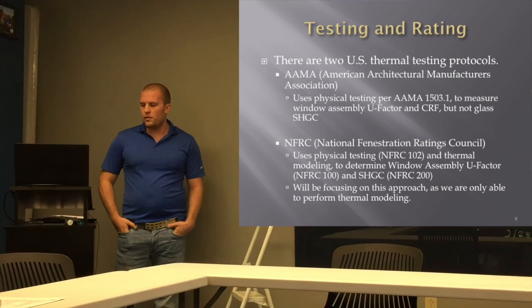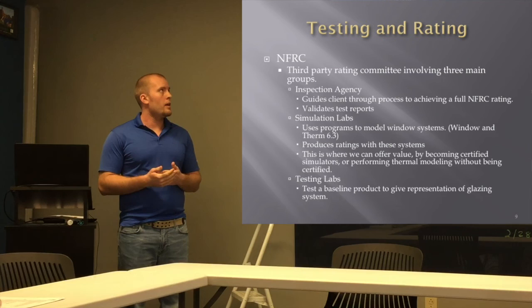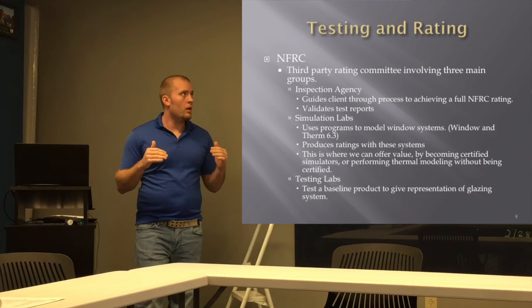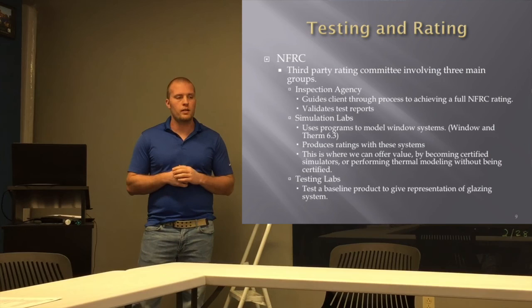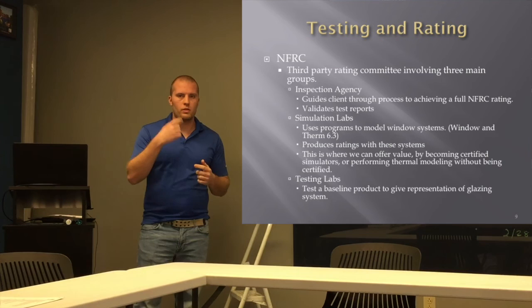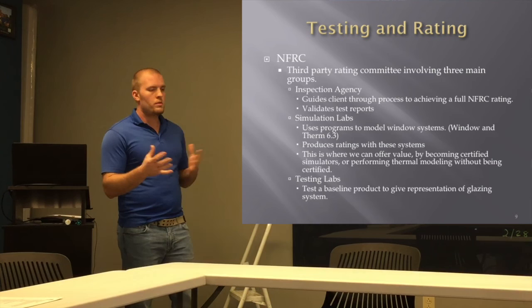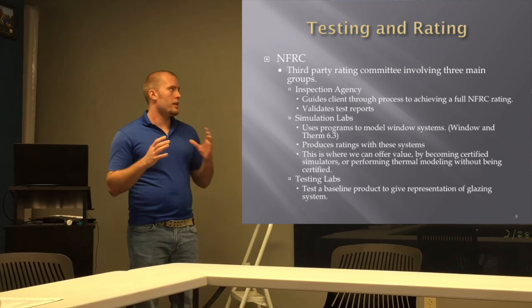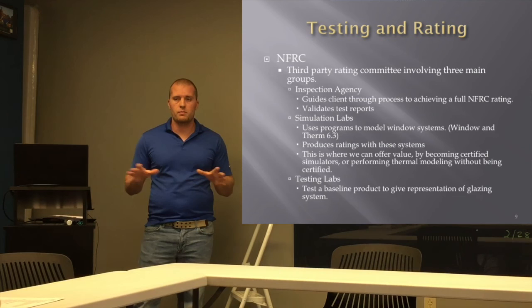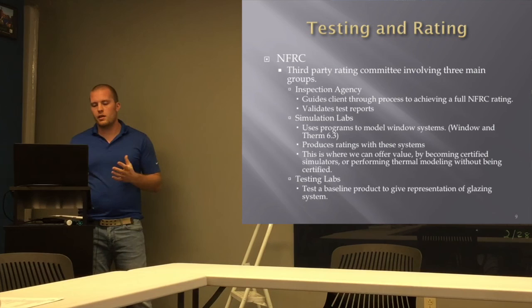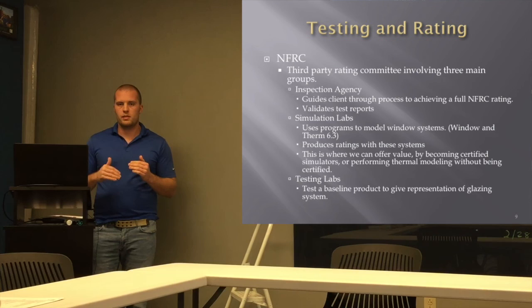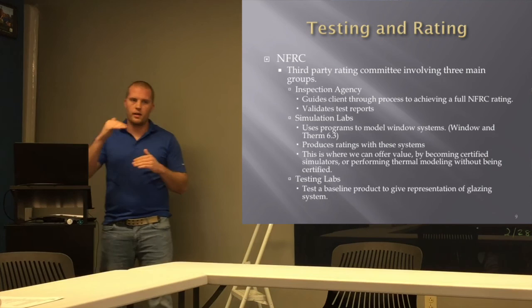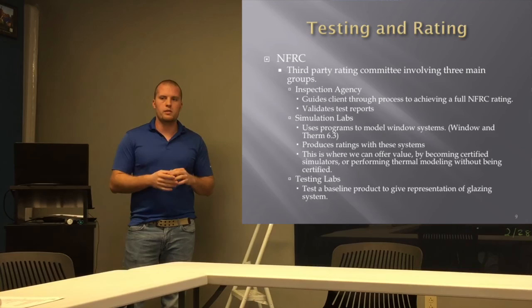The NFRC is a third-party rating council with three main groups: inspection agency, simulation labs, and testing labs. The inspection agency oversees the whole process — guiding clients through validation and validating the final test report. Simulation labs use the programs to calculate thermal efficiency. Testing labs take a representative product and produce ratings through physical testing. The process flows from inspection agency through simulation and testing labs and back, where the inspection agency verifies both reports are within acceptable variance.